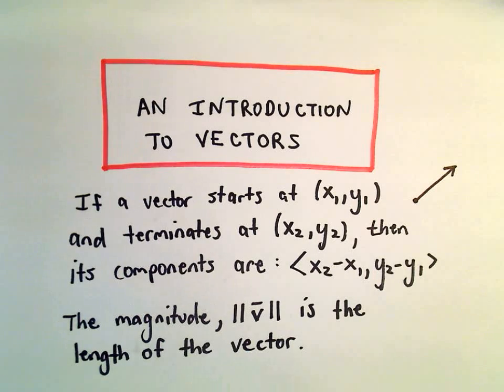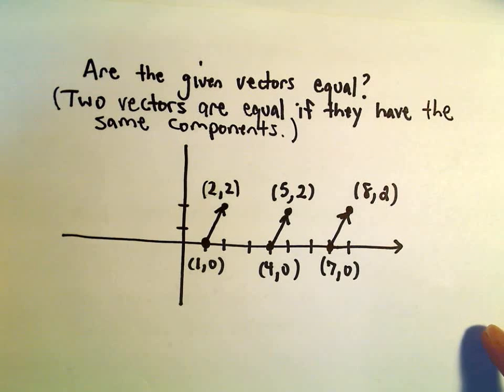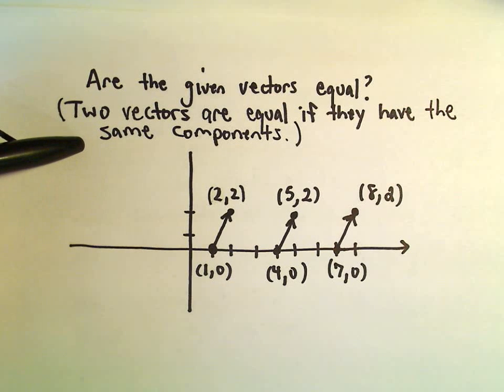Okay, in this video we're going to look at another fundamental idea with vectors, and that is when do we consider if two vectors are equal? The answer to that is we say two vectors are equal if they have the same components.